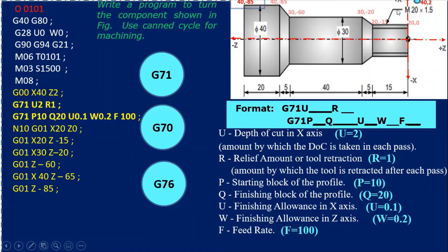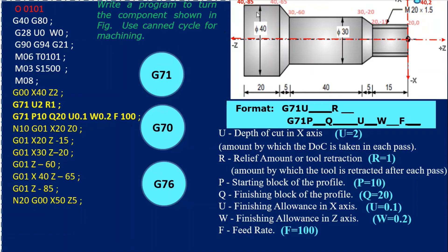These parameters and coordinates are very important. After the profile, N20 G00 X50 Z5 — this moves the tool away from the component after the last operation, which is the Q20 finishing block of the profile. The tool moves to X50 Z5 so you can remove the job or change the tool for other operations. Since Q20 is given here, you also have to write N20 in the profile.